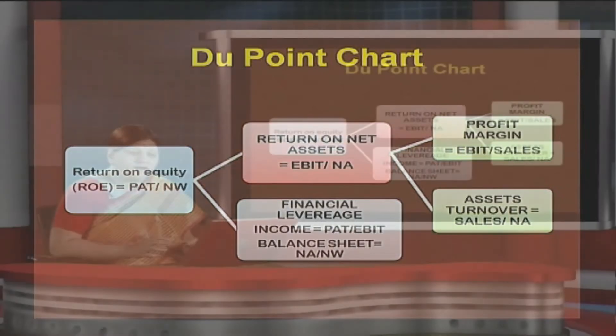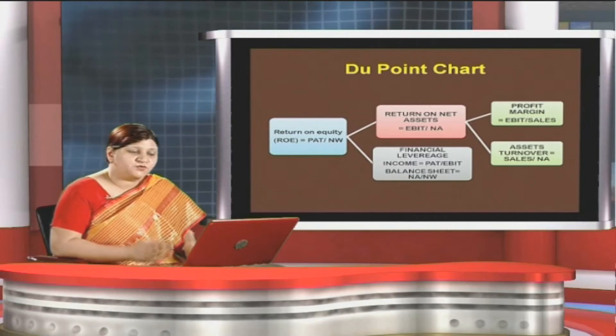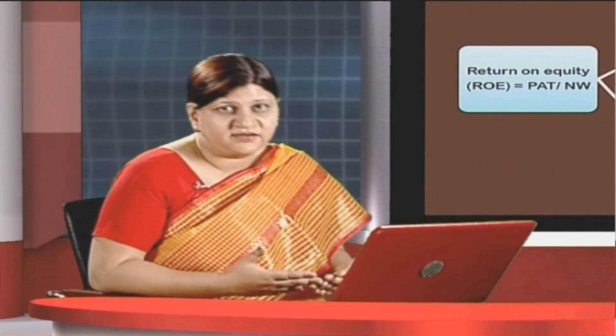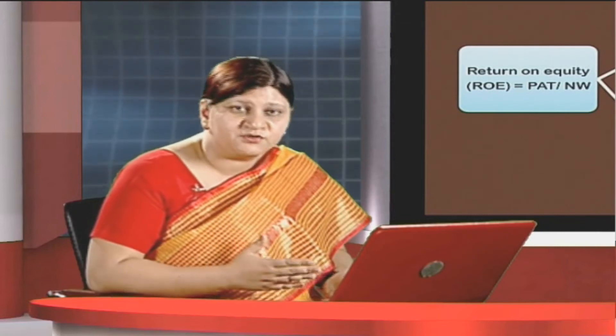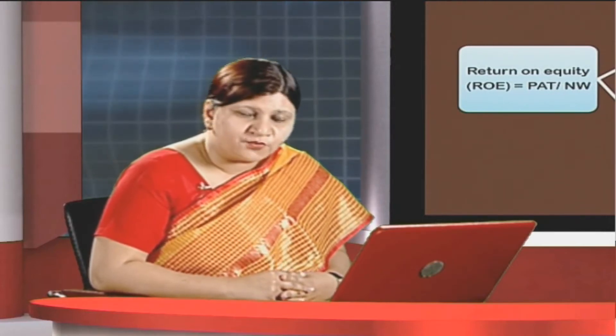Simplifying this formula, we get return on equity = profit after tax divided by net worth. The exercise under the DuPont chart analysis is to ascertain return on equity. While we could simply use PAT divided by net worth, the DuPont analysis shows how we arrived at this formula and what components are used: profit margin, asset turnover, and an equity indicator showing the impact of debt on return on equity. Given any information, we can ascertain return on equity using the DuPont chart.